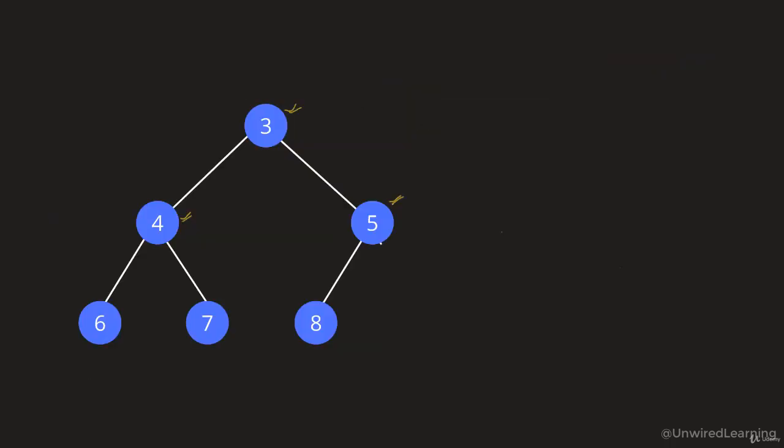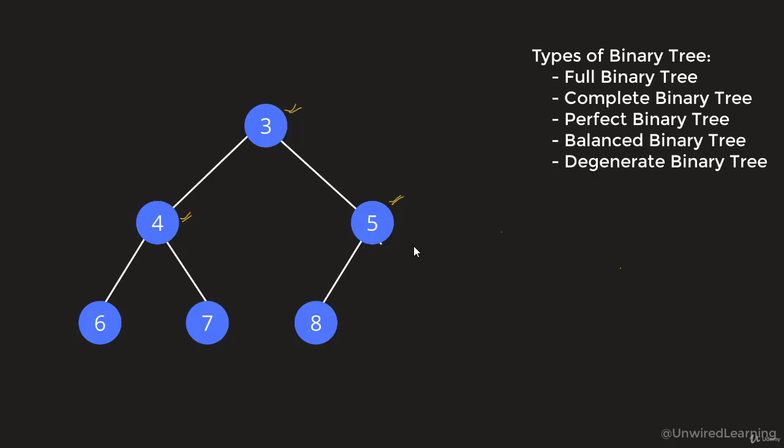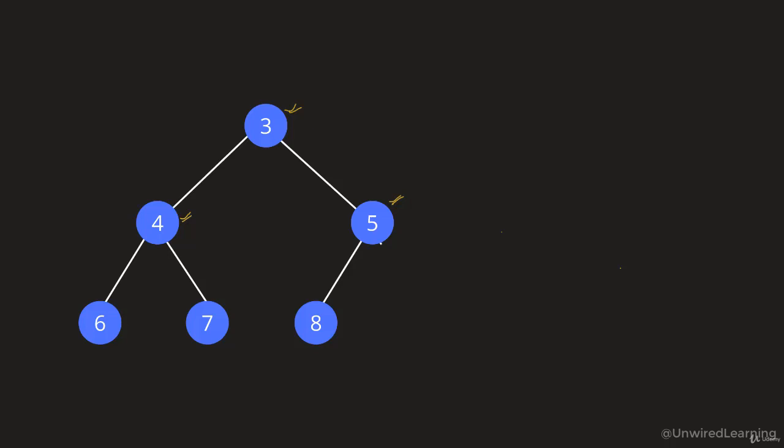The next important thing to discuss is types of binary tree. There are five types: full binary tree, complete binary tree, perfect binary tree, balanced binary tree, and degenerate binary tree. These are the five terms you need to be aware of. I am going to bring out their diagrams and discuss each one step by step, showing how they are different from each other. Let us start with the first one: full binary tree.